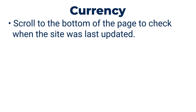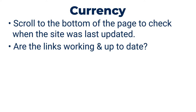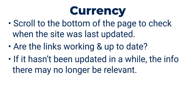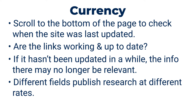To determine currency, check to see when the last time the site was updated. You can usually find this by scrolling all the way down to the bottom of the site. Also, if there are links on the site, are they current and up to date, or are they dead links? If it hasn't been updated in a while, there's a good chance that the information there, even if accurate at the time, is out of date. It's also important to note that different fields develop and publish research at different rates. A history site from several years ago might still be accurate, but a science-based site might already be out of date, especially if it wasn't updated within the last five years.